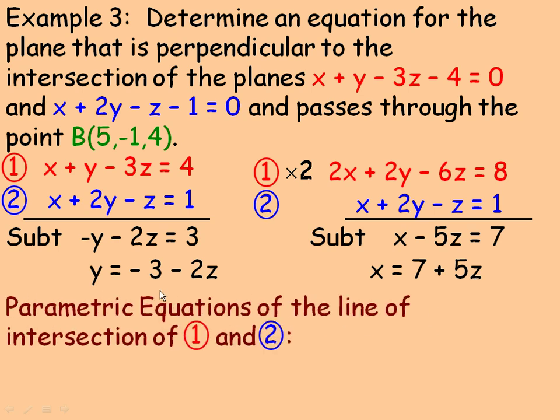So if we write out the parametric equations for this line of intersection of these two planes and letting z be the parameter t, so we would get x equals 7 plus 5t, y would equal negative 3 minus 2t, and z equals t.